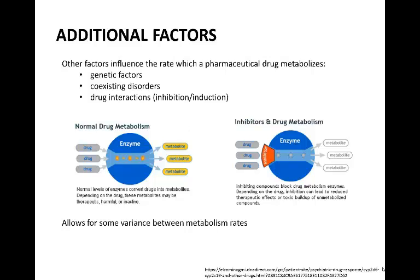Although the metabolism of drugs is largely dependent on the structure of the drug itself, there are other factors that can affect the metabolic rate. Some patients metabolize drugs quickly, while others metabolize their components at a much slower rate, and the reasons for this can be influenced by genetic factors, coexisting disorders, and drug interactions. Interactions with drugs can result in competition and produce an inhibitory effect on the metabolic rate. As the diagram suggests, if the drug's purpose is to enter the body to be broken down by enzymes into metabolites, then the inhibitor prevents that pathway from occurring. However, drugs can also act in a stimulatory manner and increase the rate of metabolism, giving some variance between metabolic rates among individuals.